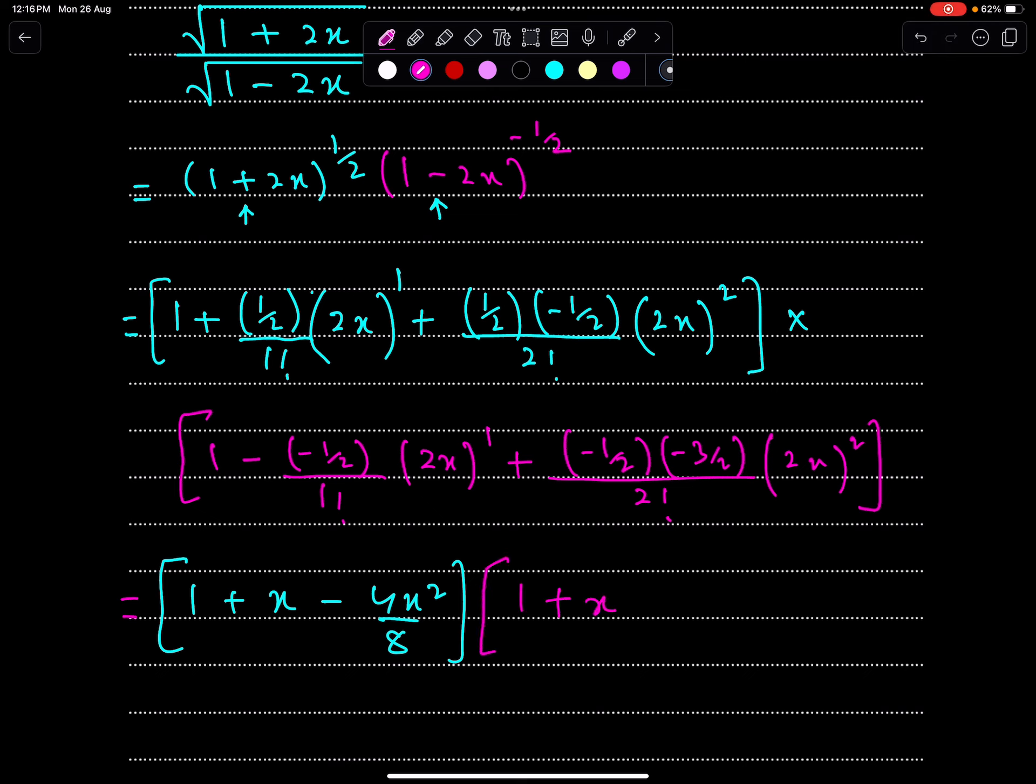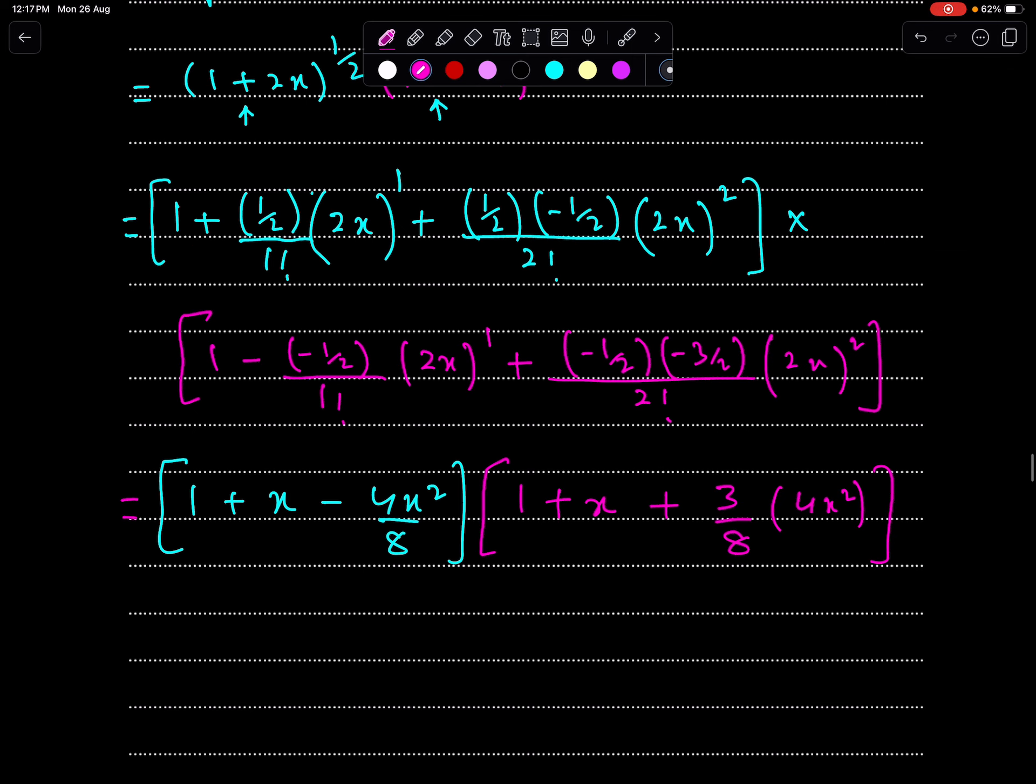Now the second expansion: 1 plus x. Minus, minus gives plus. And this will become just x. Then we have this 2, this 2, and this 2, so it is 3/8 times 4x squared. So the simplified form of the first expansion is 1 plus x minus 1/2 x squared. And the simplified form of the second expansion is 1 plus x plus 3/2 x squared.